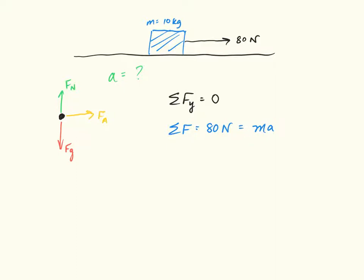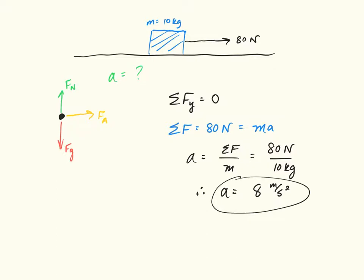Rearranging to solve for acceleration: a equals net force over mass. Plugging in our values, the acceleration of that block is 8 meters per second squared. That's a very simple example of applying Newton's second law. The big takeaway is that unbalanced forces, which we call net force, are equal to mass times acceleration — that is our equation for Newton's second law. Please write down any questions you have so we can go over them in class.